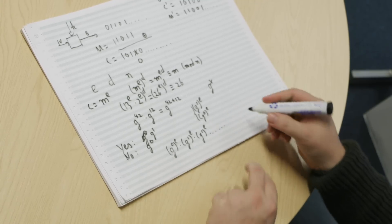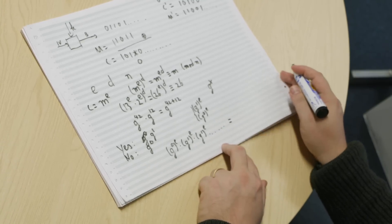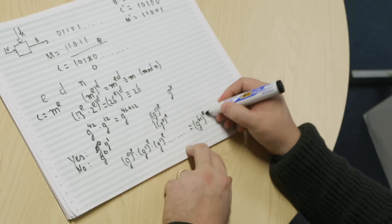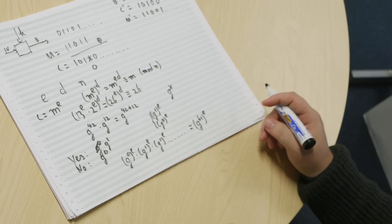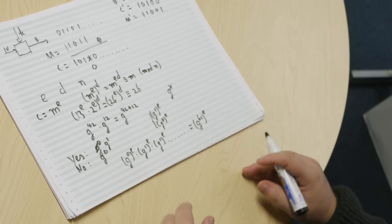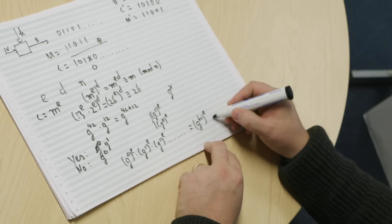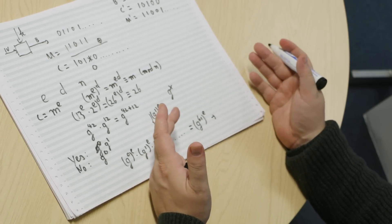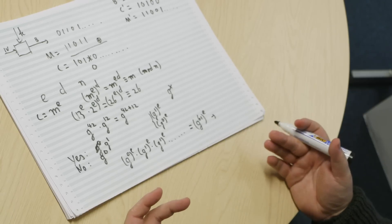Now you can just do this multiplication, and what you will end up with is G to the power, however many people voted yes, let's say 61 people voted yes to the power E. And now a central authority who knows the key D can take that number and raise it to the Dth power, which is decrypting it. And what they will see is G to the power 61, which they will look up in their table and they will recognize this corresponds to 61 yes votes.